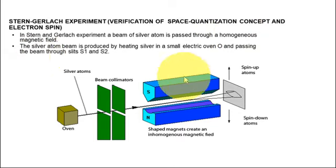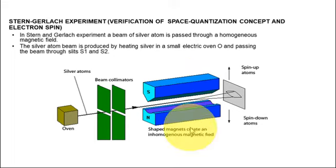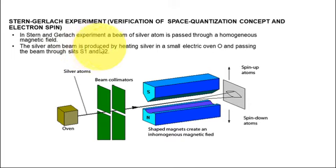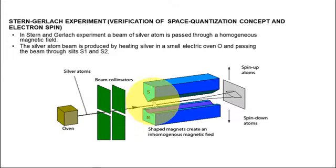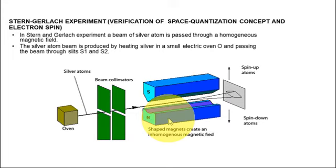How is this inhomogeneous magnetic field created? It is created by using two poles of the magnet: one is flat and the other has a knife edge. The silver atom beam is produced by heating silver atoms in a small electric oven and passing the beam through slits S1 and S2. The beam then passes through the inhomogeneous magnetic field created by the sharp knife-edge south pole and the cylindrically flat north pole, and forms an image on the photographic plate.